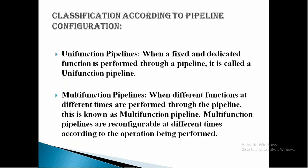Classification according to pipeline configuration consists of unifunction and multifunction pipelines. When a fixed and dedicated function is performed through a pipeline, it is called a unifunction pipeline. When different functions at different times are performed through the pipeline, this is known as a multifunction pipeline.